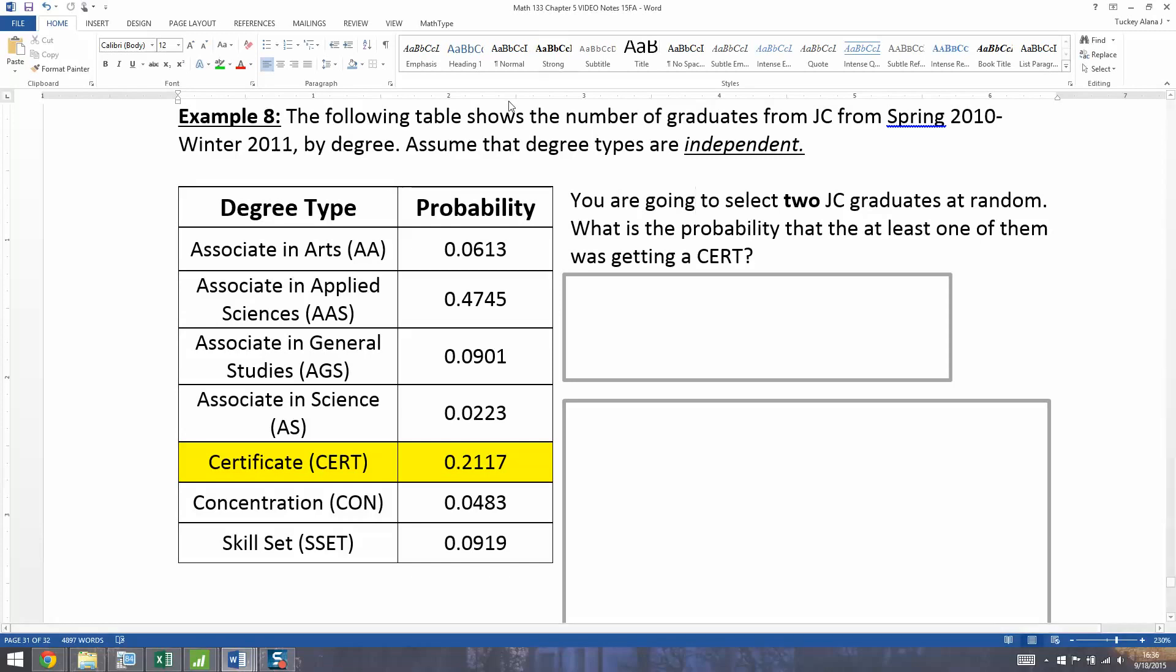Now notice we're assuming that degree types are independent, that there's no siblings or whatever in this degree type, which might not actually be a great assumption to make, but that's what we're going with. So let's start with just the simple basics. Before you get trying to do the big problem, don't try to apply the rule directly right away. Try to just figure out the stepping stones, the building blocks you're going to need for that rule.